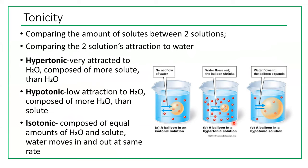Using a balloon as an example: in isotonic solution, the concentration inside and outside the balloon is equal, so water moves in and out but there is no net flow of water — equal amounts move in and out. In hypertonic solution, water leaves the balloon and the balloon shrinks. In hypotonic solution, water moves inside the balloon and the balloon expands.